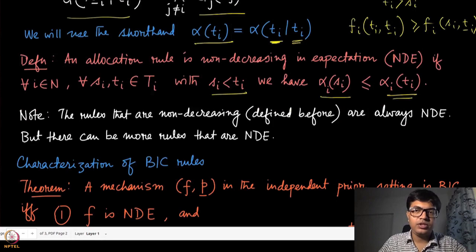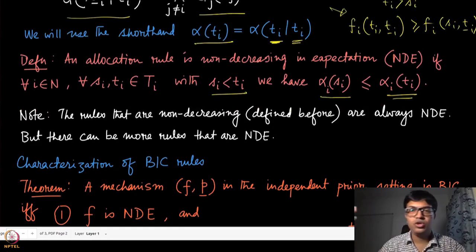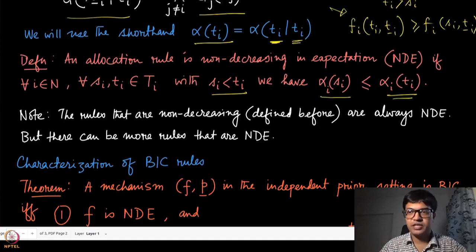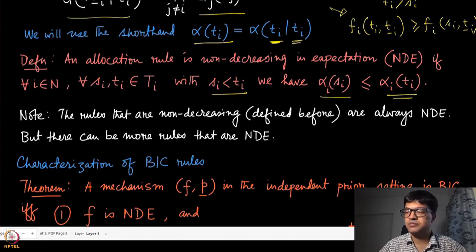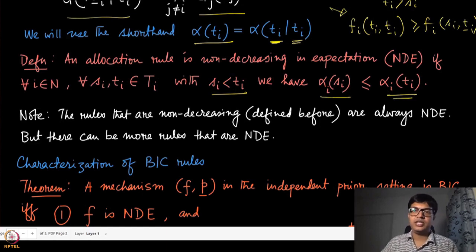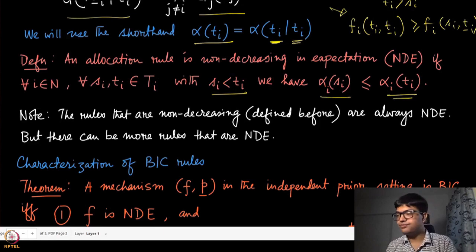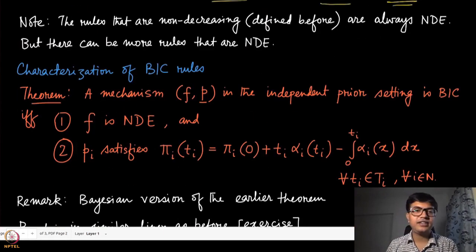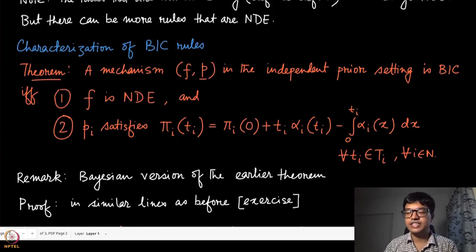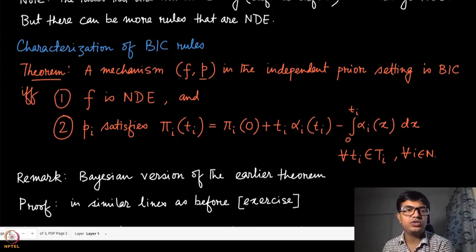All the rules that were non-decreasing in the prior-free setting are always also non-decreasing in expectation, because if they are non-decreasing for every t_{-i}, taking the expectation preserves that. But now we can have more rules that are NDE but not ND — this opens up many other mechanisms on which we can try to maximize revenue.